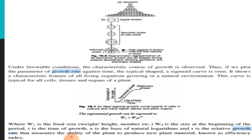In the sigmoid curve, W is the final size or weight, W0 is the size at the beginning of the period, t is the time of growth, e is the base of the natural logarithm, and r is the relative growth rate that measures the ability of the plant to produce new plant material, known as the efficiency index.